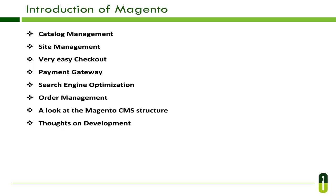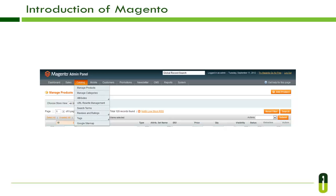Let's understand these features one by one. Magento comes with an easy-to-use catalog management, with owners capable of managing products, their prices, tax rates per location, customer group, product type, and many more. Batch import and export of catalog is also available, allowing owners to upload product information through a CSV file. All catalog-related features are available under the Catalog option on the Magento admin panel.